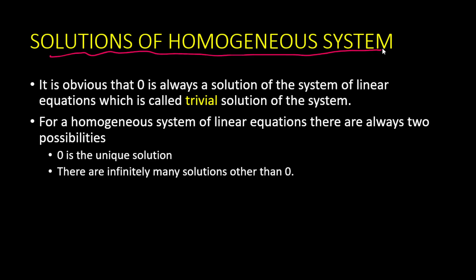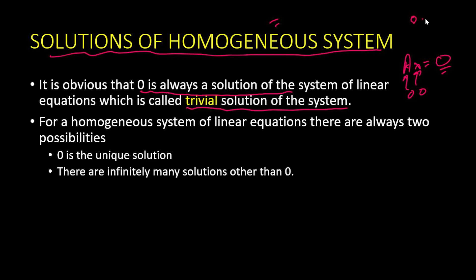If we talk about the solution of the homogeneous system, it is obvious that zero will always be a solution. This is called the trivial solution of the system. Because multiplying anything by zero gives zero — either A times zero equals zero, or zero times X equals zero — so zero is always a solution.